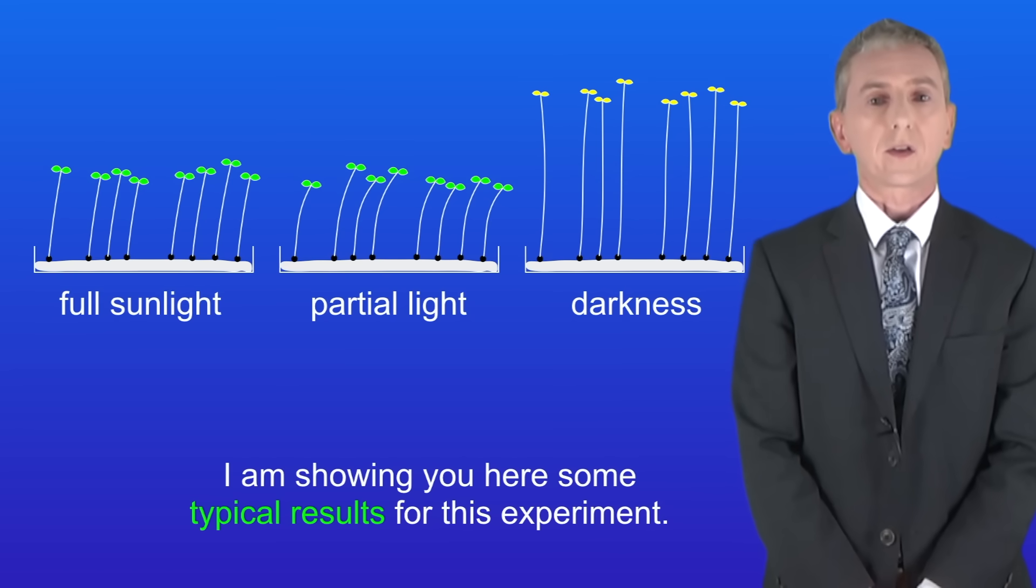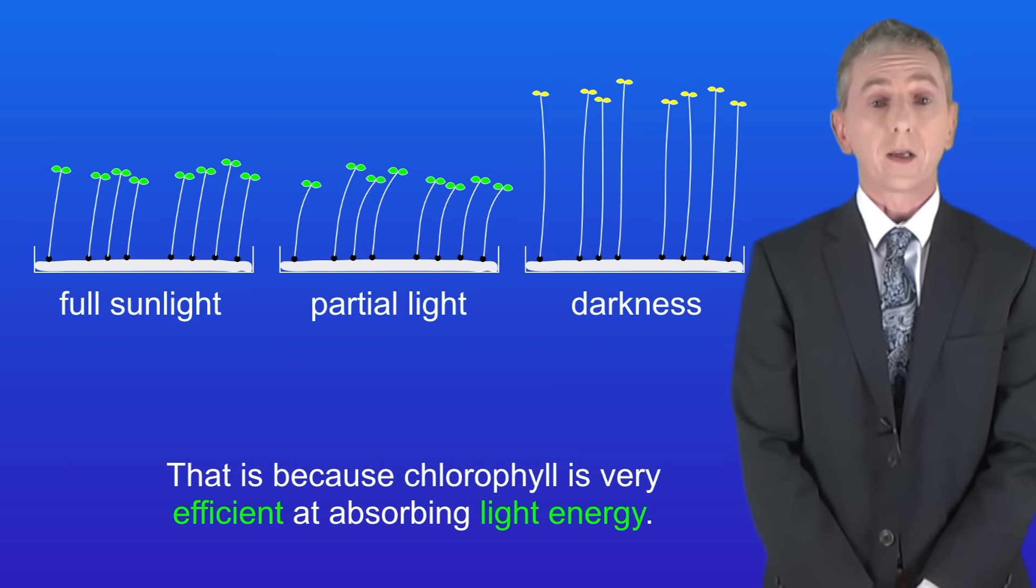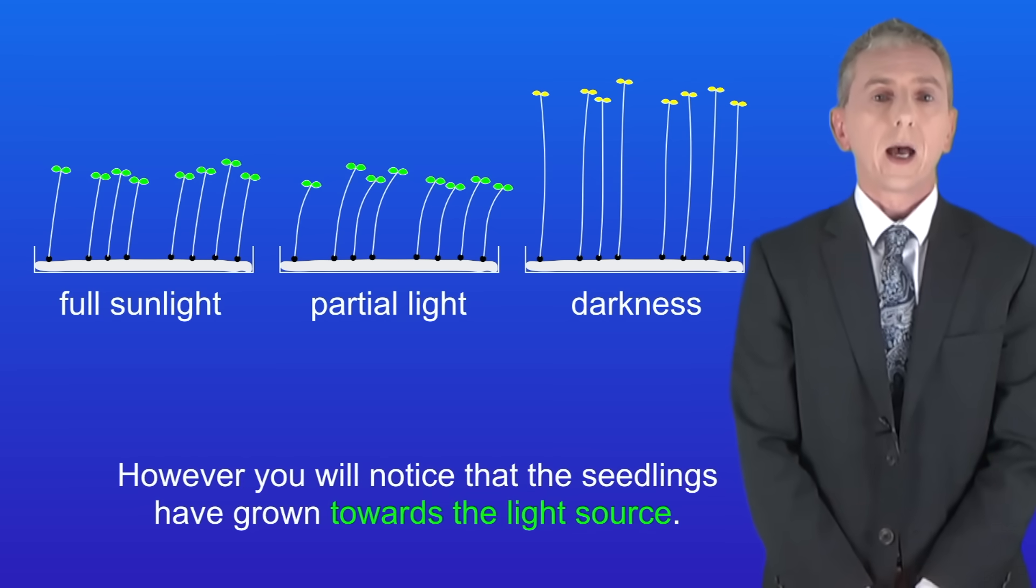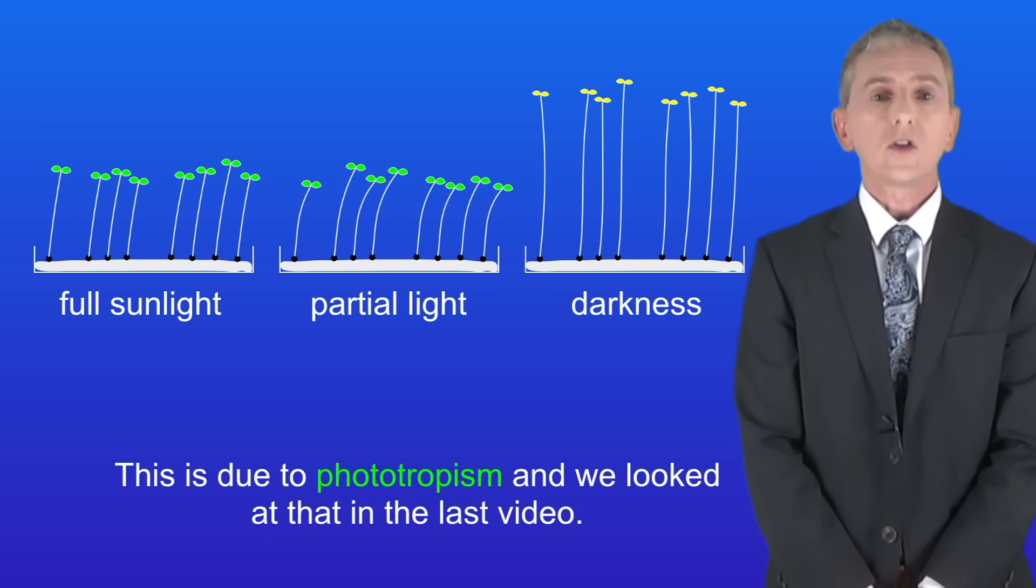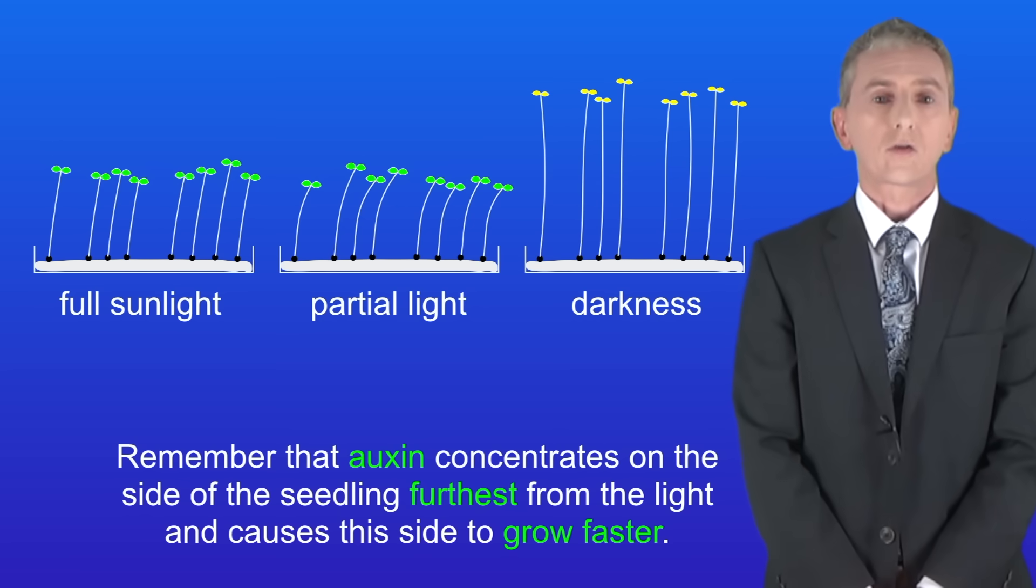I'm showing you here some typical results for this experiment. As you can see, the height of the seedlings is similar for both full sunlight and partial light. That's because chlorophyll is very efficient at absorbing light energy, so plants do not need full sunlight to grow. However, you'll notice that the seedlings have grown towards the light source. This is due to phototropism, and we looked at that in the last video. Remember that auxin concentrates on the side of the seedling furthest from the light and causes this side to grow faster.